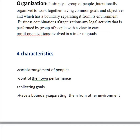An organization will have systems and procedures in place to ensure that group goals are achieved. For a company, this could involve setting sales targets or periodically assessing the performance of staff members. It is worth noting that a major similarity between most organizations is that they are mainly concerned with taking in inputs and transforming them into outputs.